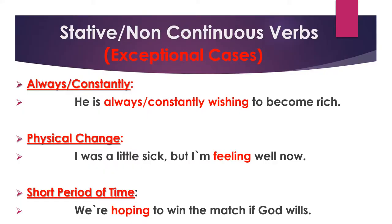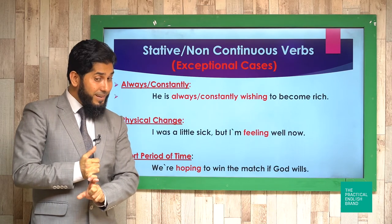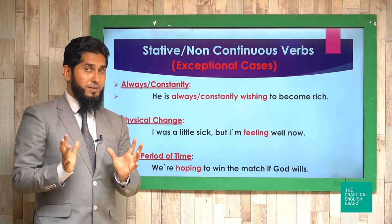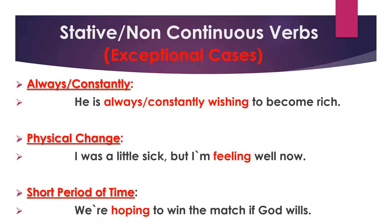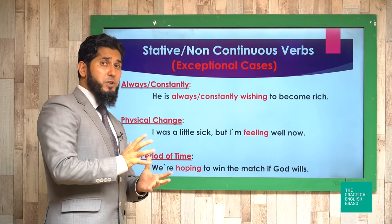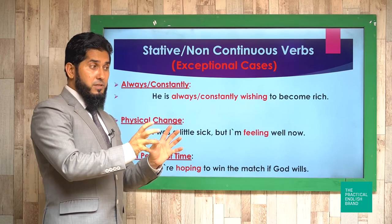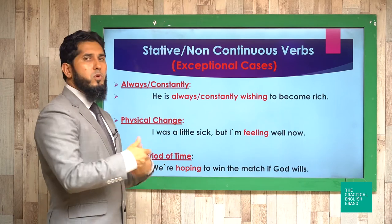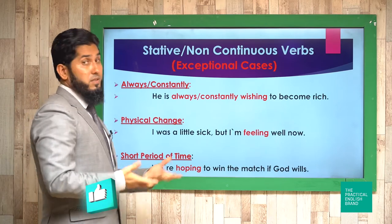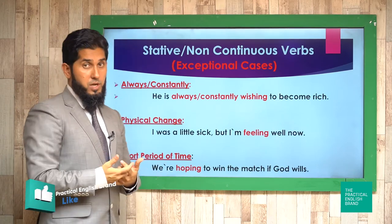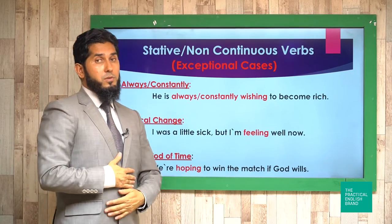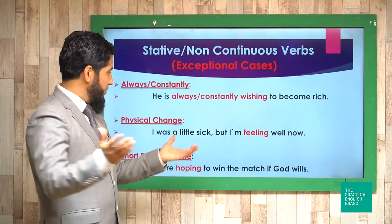The first exception: if you use the adverbs 'always' or 'constantly,' you may use a stative verb in a continuous tense. For example, 'He's always wishing to become rich' or 'He's constantly wishing.' Here, 'wish' is a stative verb, but with 'always,' it's acceptable and common among native speakers. Another example: 'He's always needing a lot of money' or 'I'm always needing a lot of time to explain grammatical points' — these are possible.